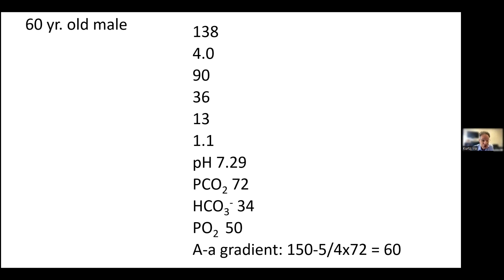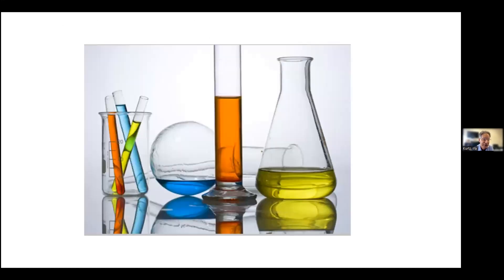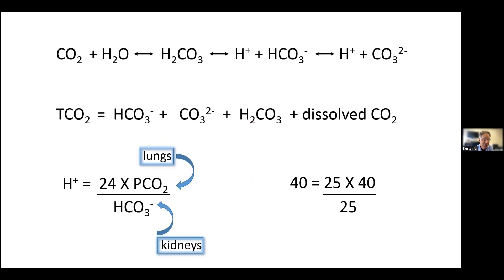Could this be acute respiratory acidosis? There, the PCO2 is the driver. For every 10 increase in the PCO2, the bicarbonate goes up by 2. That has nothing to do with kidneys — it's solely the bicarbonate buffer reaction. When PCO2 goes up, you generate bicarbonate. The protons that are also generated bind to other buffers like phosphate, albumin, and hemoglobin, so the free hydrogen ion concentration changes very little. You generate about 2 millimoles per liter of bicarbonate for every 10 increase in PCO2.